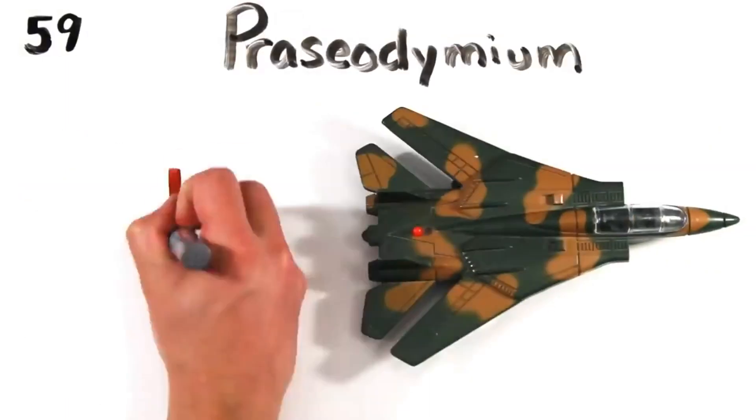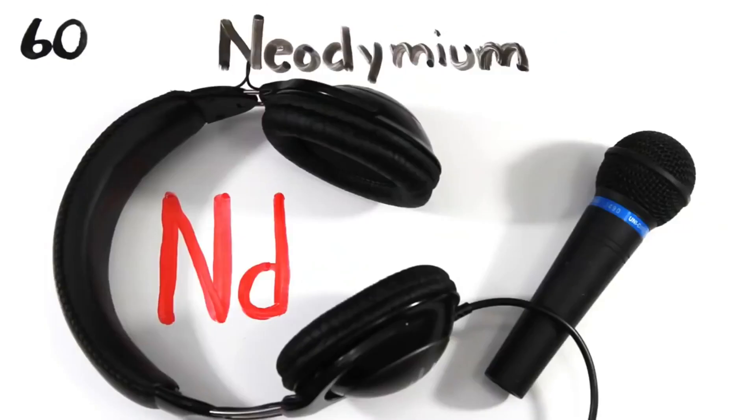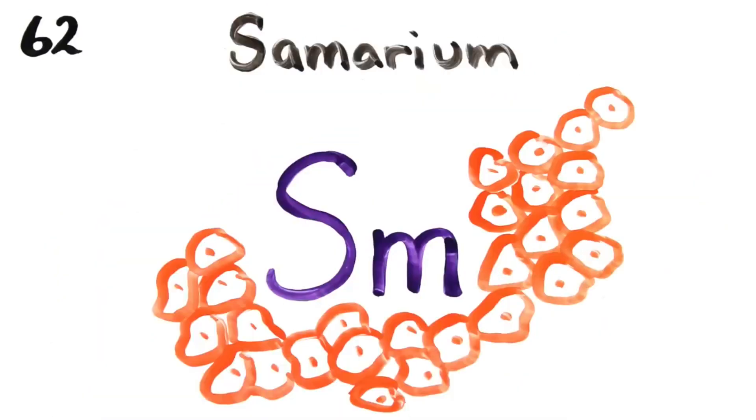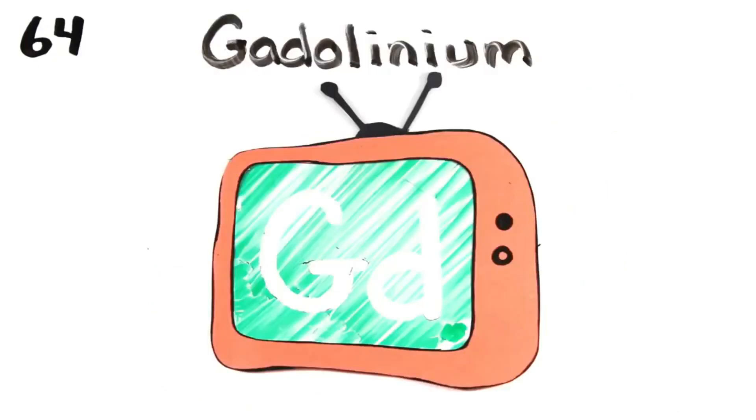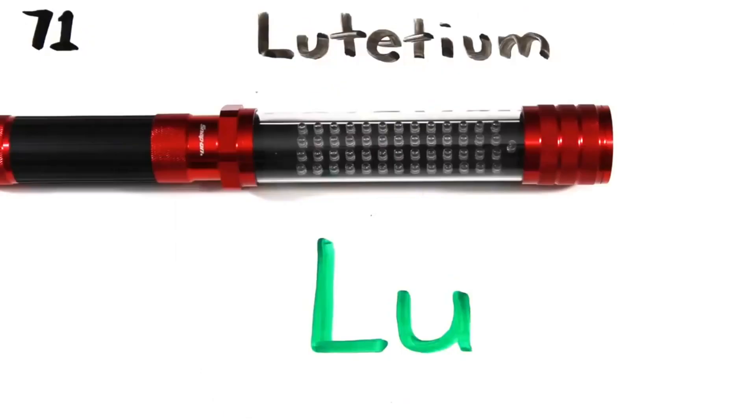Cerium and Praseodymium. Neodymium's next to Promethium then 62's Samarium, Europium, Gadolinium and Terbium, Dysprosium, Holmium, Erbium, Thulium, Ytterbium, Lutetium.